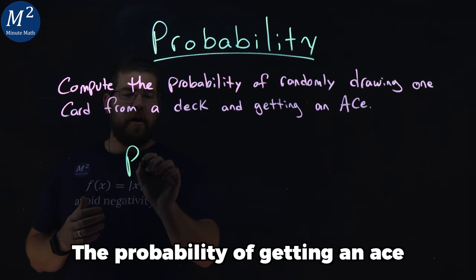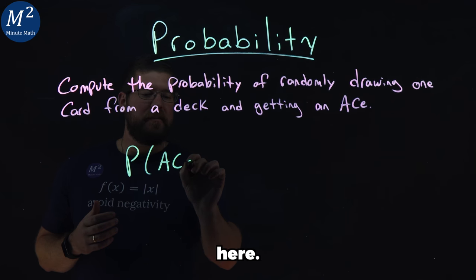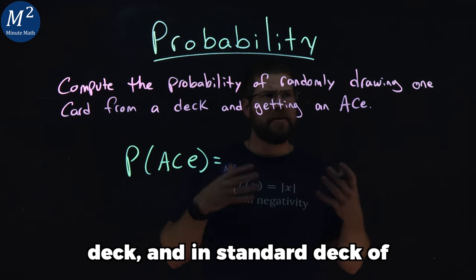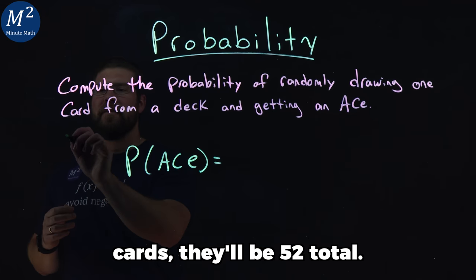To find the probability of getting an ace, we first need to know how many cards are in a deck. In a standard deck of cards, there will be 52 total.